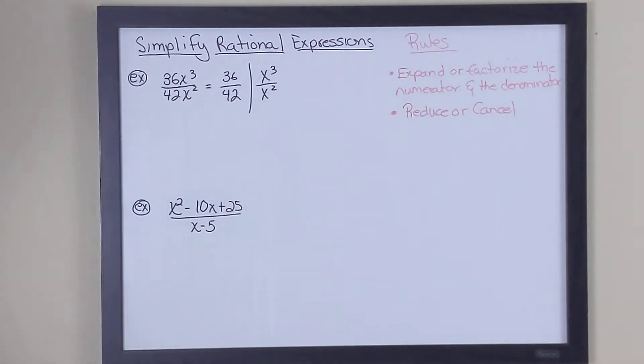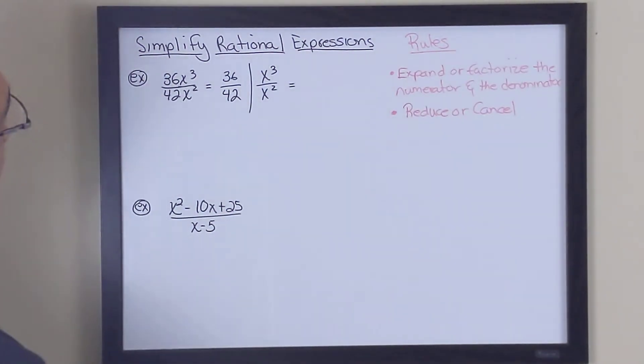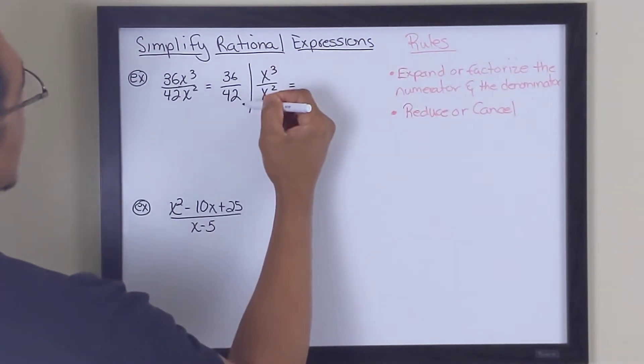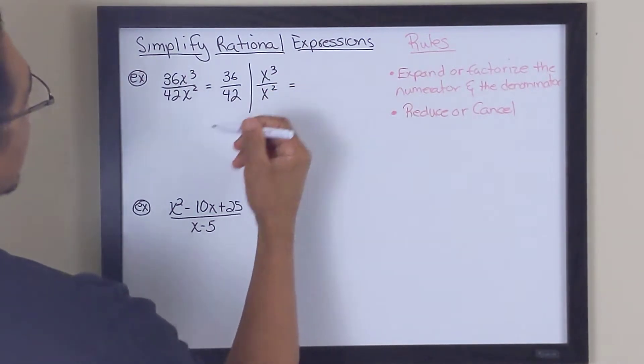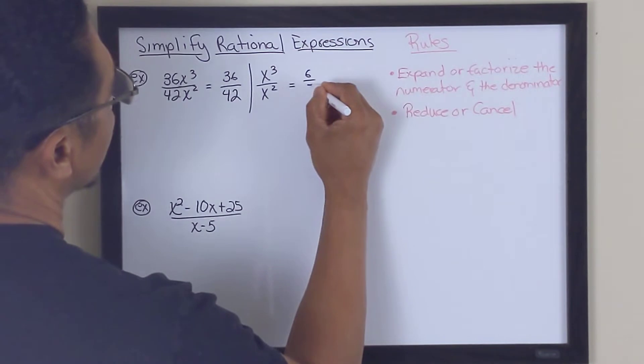Okay? So we look at what does 36 and 42 have in common. Well, 36 and 42 basically, I believe, has 6 in common. So we divide 36 by 6 and we divide 42 by 6 and we end up with 6 over 7.